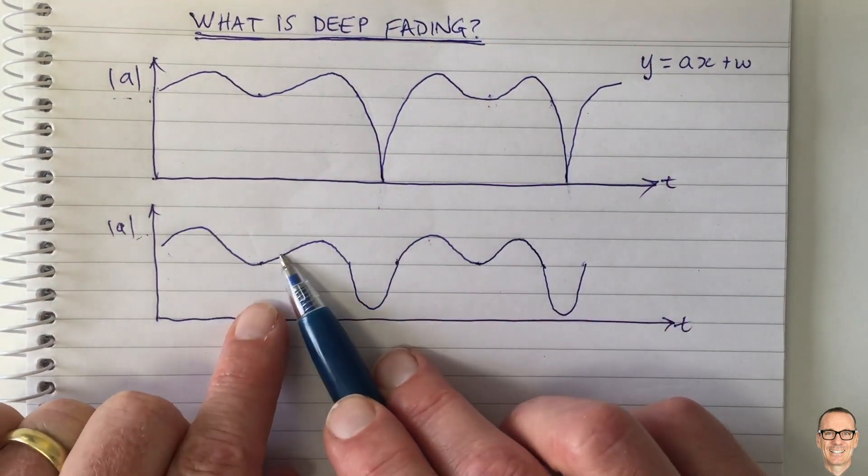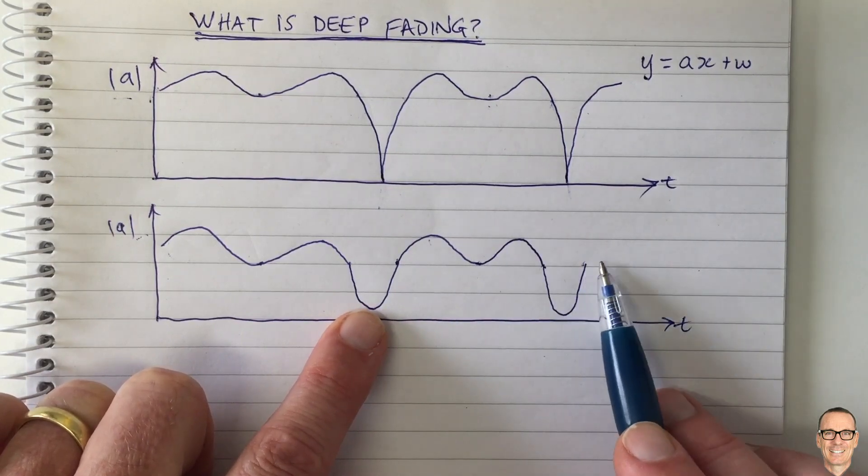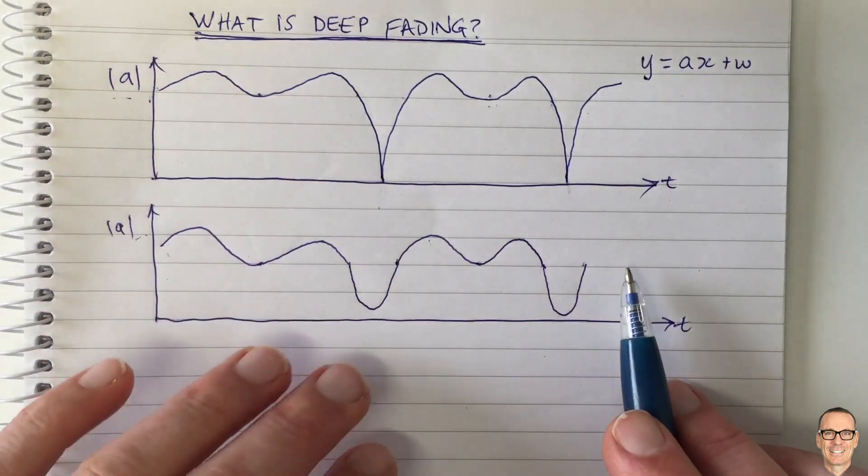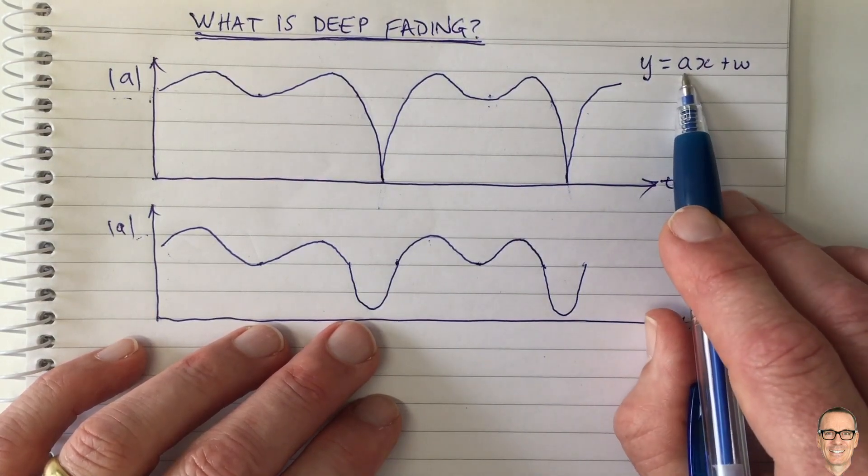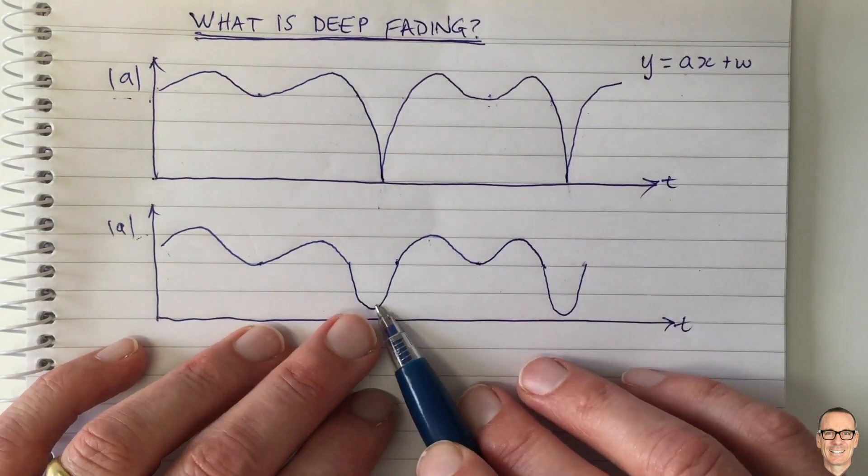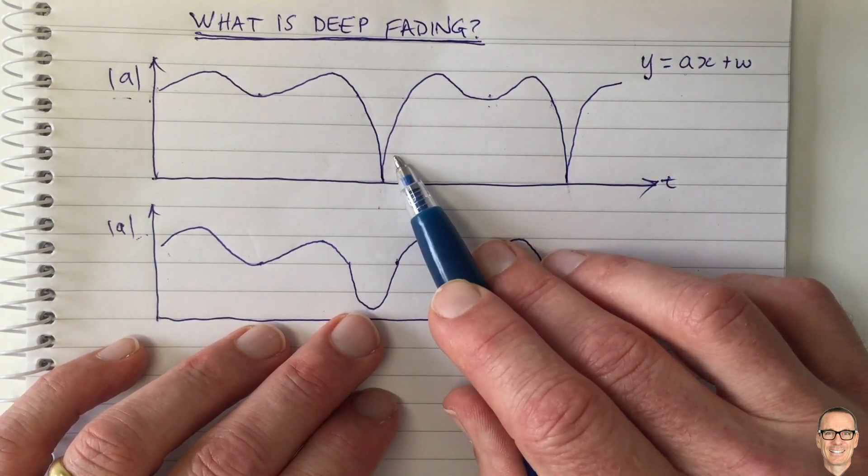So it is just a continual change of that channel gain as your handset moves or you're in a vehicle or you're walking around in digital communications and all the different paths happen to add up destructively. But it's not a sudden drop like this picture seems to indicate.